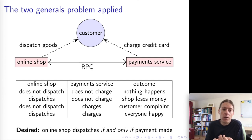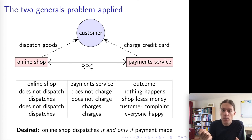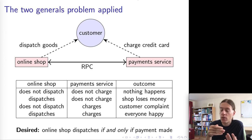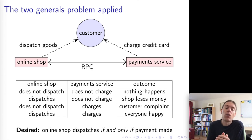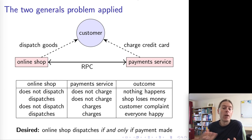Another option is that when the network is repaired, the online shop checks with the payment service: 'did you actually charge that card? I never heard back from you.' The payment service will probably always go ahead and charge the card, since the payment can be refunded if necessary. That is the way in which this online shopping problem is not actually exactly the same as the two generals problem. Nevertheless, the two generals problem does illustrate this issue of uncertainty in a distributed system when we're not sure if the messages got through or not.